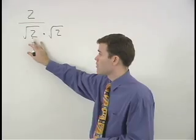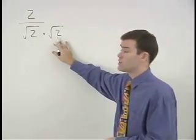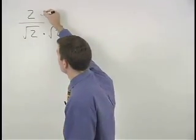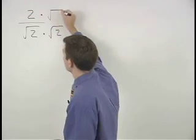If we multiply the denominator of this fraction by the square root of 2, however, we must also multiply the numerator by the square root of 2.